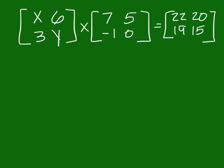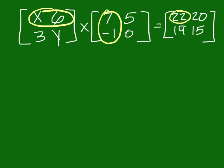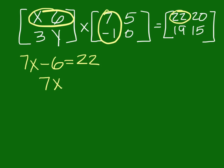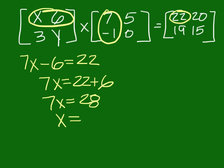We're going to solve for X first. So what we want to find is a column in the second matrix that has no variable — and both of them are free of variables. So you could use this with this column and 22, or you could use this with the second column and 20. I'm going to use this, this, and this. X times 7 is 7X, and 6 times negative 1 is negative 6, so minus 6, set equal to 22. So 7X equals 22 plus 6 — 7X equals 28, and X equals 4.